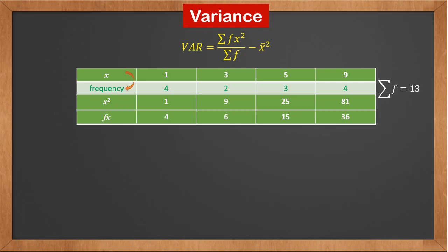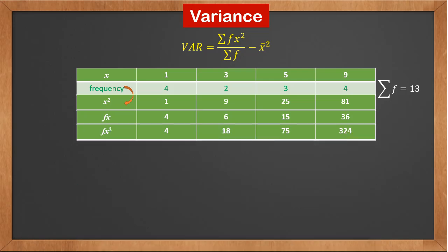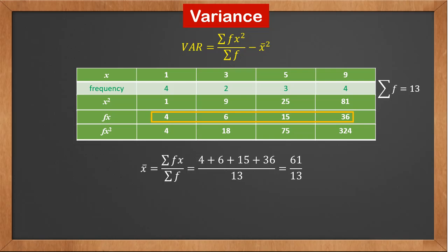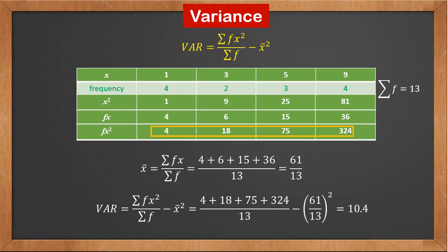Next, we add a row of f times x and calculate the products: they are 4, 6, 15, and 36. Finally, we add a row of f times x squared and calculate the products: they are 4, 18, 75, and 324. Now we have all the values to calculate the variance. First, calculate the mean x-bar as the sum of the f times x row divided by sigma f. The variance is the sum of the f times x squared row divided by sigma f, minus the square of x-bar. So the variance is 10.4.